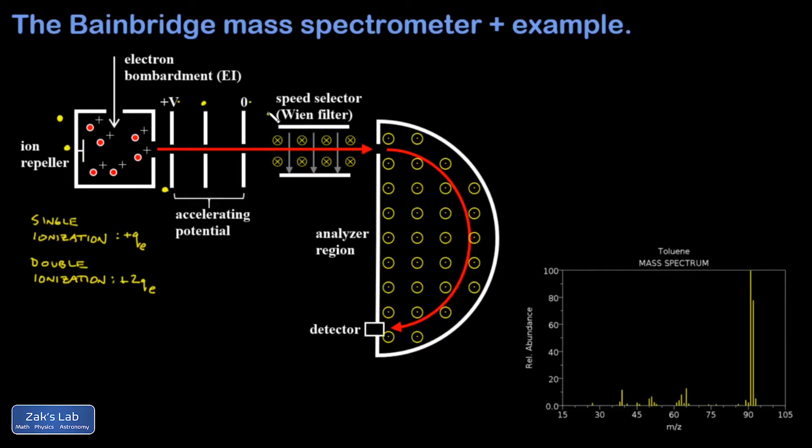At the next stage, we have a Wien filter, also called a speed or velocity selector, consisting of crossed electric and magnetic fields. The purpose of the Wien filter is to create a very narrow band of velocities in the beam, and this improves the resolution of the spectrometer, reducing the error bars on mass-to-charge calculations.